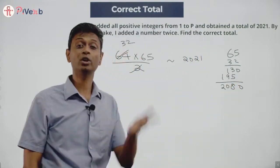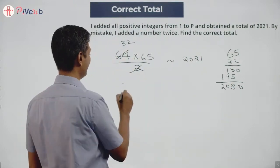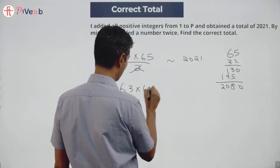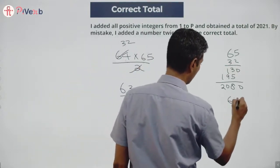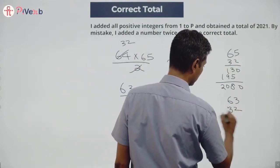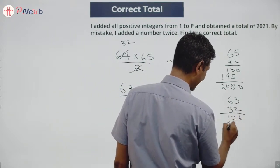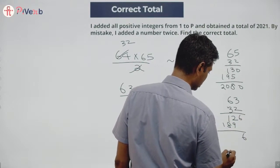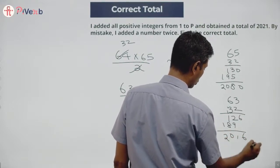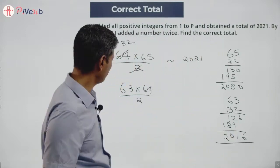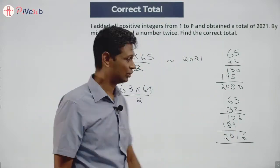So hopefully this will be 63 into 64 by 2, which is 63 into 32. 2 into 63 is 126, is 189. Add this up: 2 plus 9, 1, 2016. Lovely! Sum of the first 63 natural numbers is 2016.